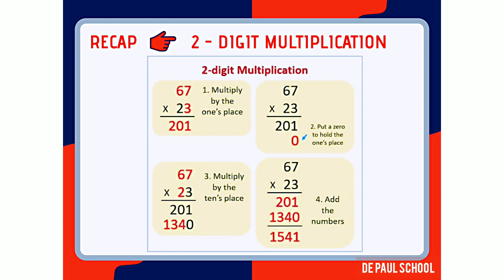Here is the example: 67 multiplied by 23. As explained, 67 is the multiplicand and 23 is the multiplier. In the first step, multiply the multiplicand 67 by the digit in the ones place of the multiplier, which is 3. So 67 multiplied by 3 gives the answer 201.